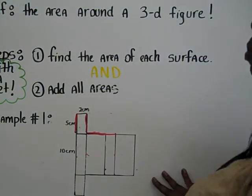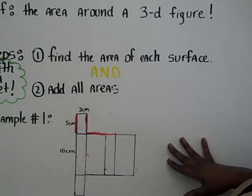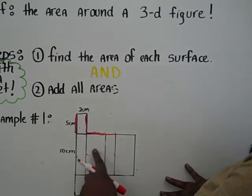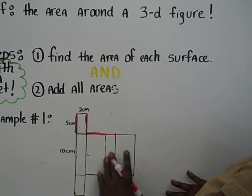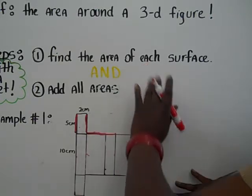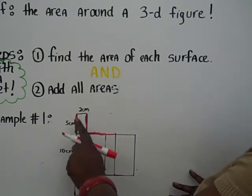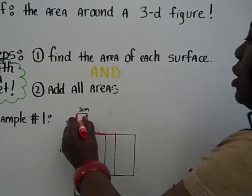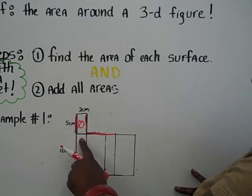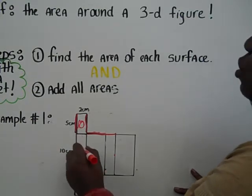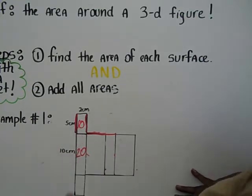So let's take a look at the rectangular prism that has been provided in example one. It consists of six different rectangles, all different sizes, but we must find the area of each one according to step one. So this top rectangle is a 2 by 5, which is 10 centimeters squared. The one below that is a 2 by 10, which is 20 centimeters squared.